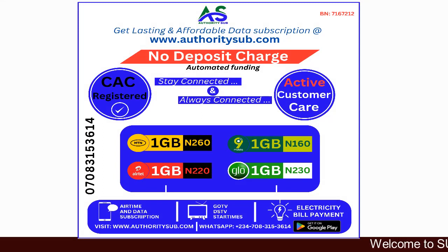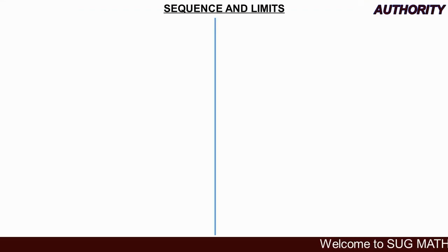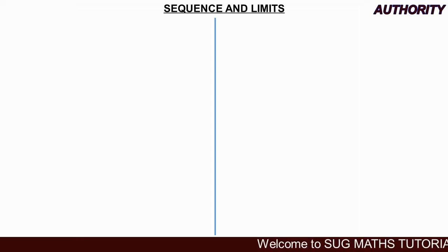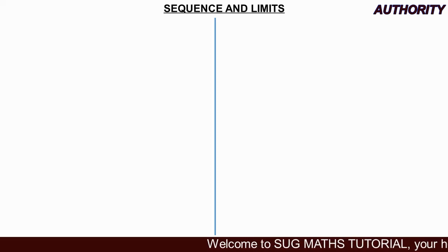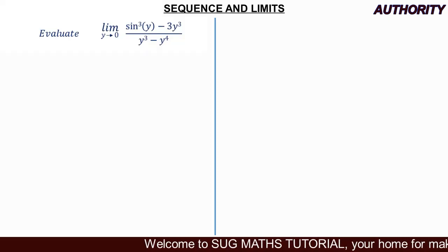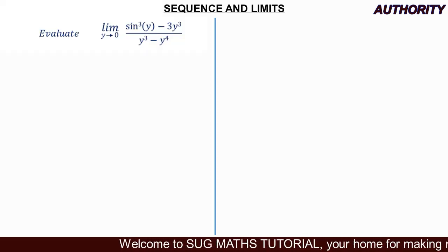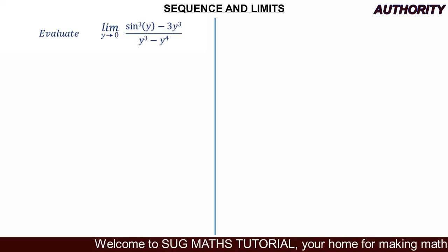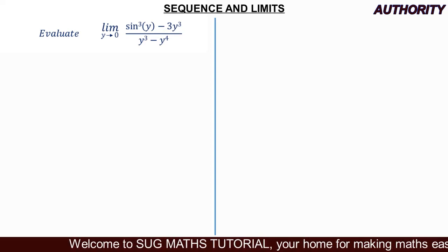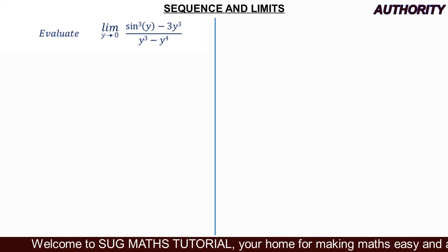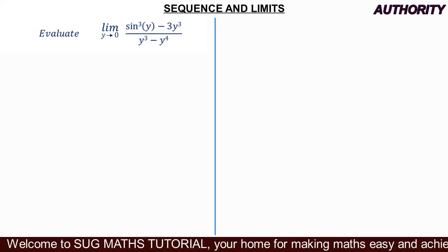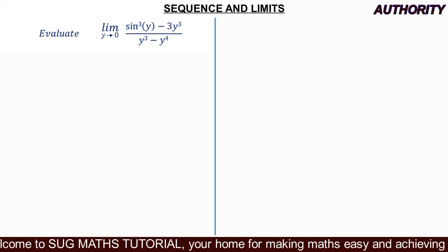Alright, welcome again. Today let's take a look at this particular problem under limits. I want you to pay attention to this question because it normally comes in different forms, just changing variables. Evaluate the limit as y approaches zero of sine cubed y minus three y cubed, all over y cubed minus y raised to the power of four.